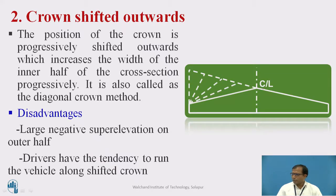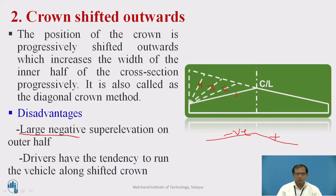In the second method, we shift the original camber from position 1 to 2, 2 to 3, 3 to 4, and 4 to 5, providing a negative super elevation. We are shifting the crown outwardly by providing negative super elevation. The only disadvantage of this method is there is a large negative super elevation on the outer half, which is used to eliminate the crown. Drivers would prefer to travel on the shifted crown position.